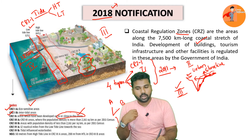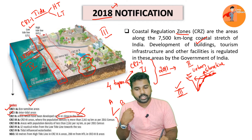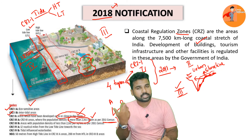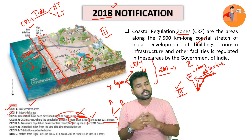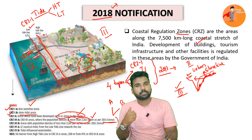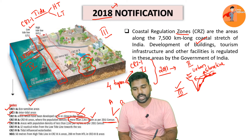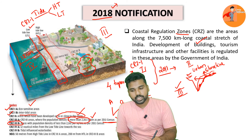Under the 2018 notification, CRZ3 Category A covers areas where population density is more than 2,161 persons per square kilometre as per the 2011 census. CRZ3 Category B covers areas where population density is less than 2,161 persons per square kilometre. This distinction forms the basis of what has been called a dilution.